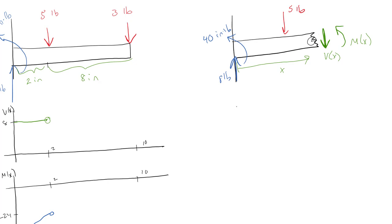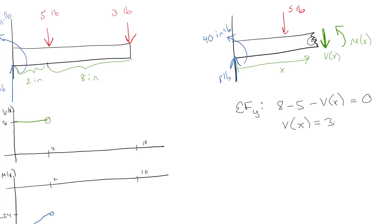Sum of forces in the y direction: I have 8 pounds going up, 5 pounds going down, and some unknown shear going down. So my unknown shear is equal to 3. That's good — it's also a constant.